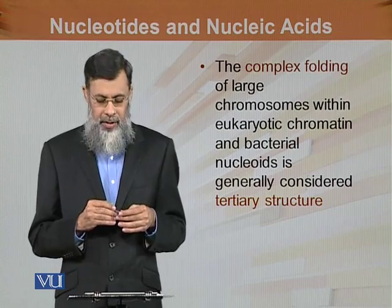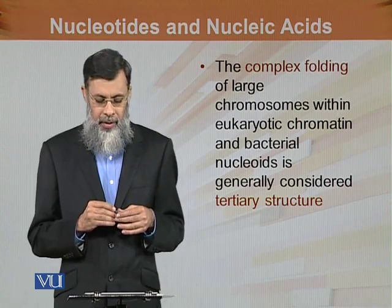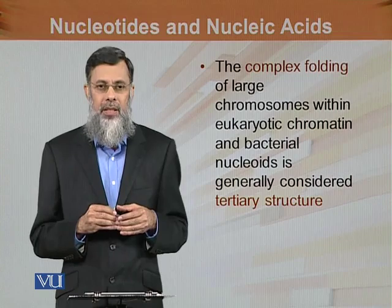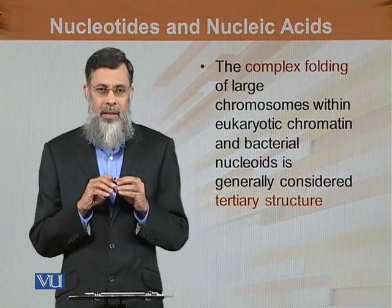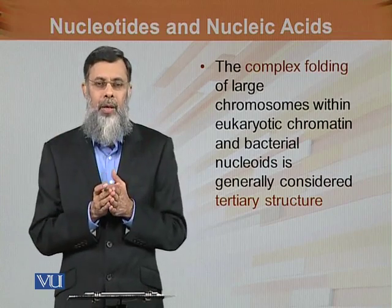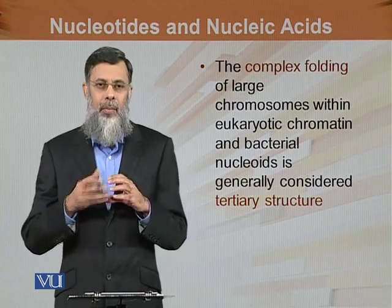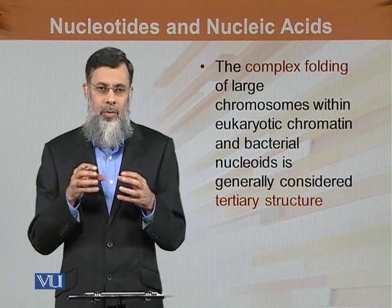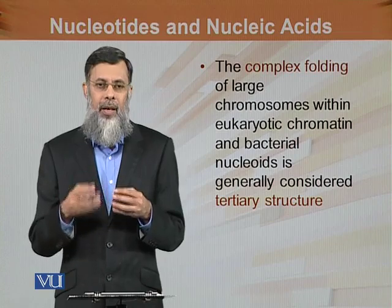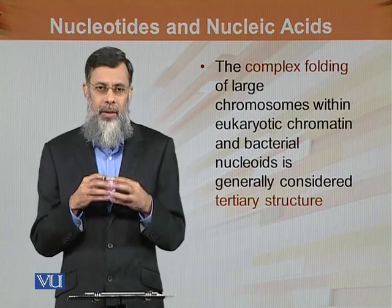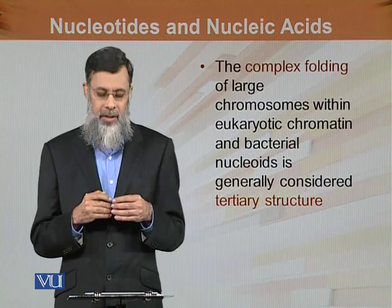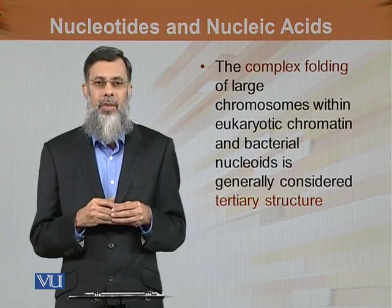The complex folding of large chromosomes within eukaryotic chromatin and bacterial nucleoids is generally considered the tertiary structure. To summarize: the primary structure is a single strand; in the secondary structure, two strands bind together by hydrogen bonding to form a double helix; and in the tertiary structure, this entire assembly folds and refolds with proteins and is packed into the chromosome. This packaging of the secondary structure is known as the tertiary structure of the nucleic acid.